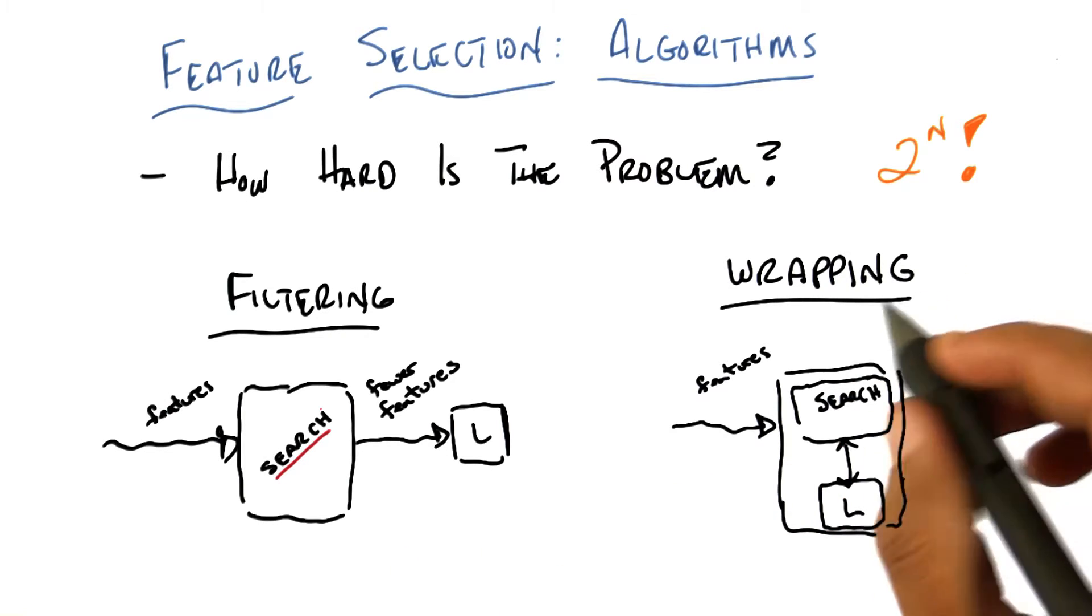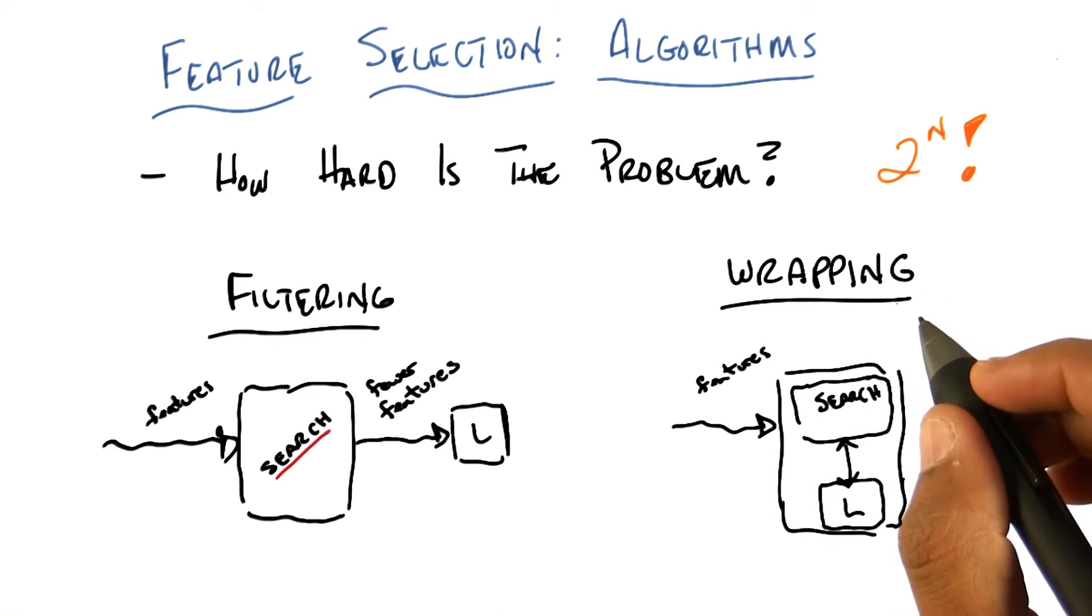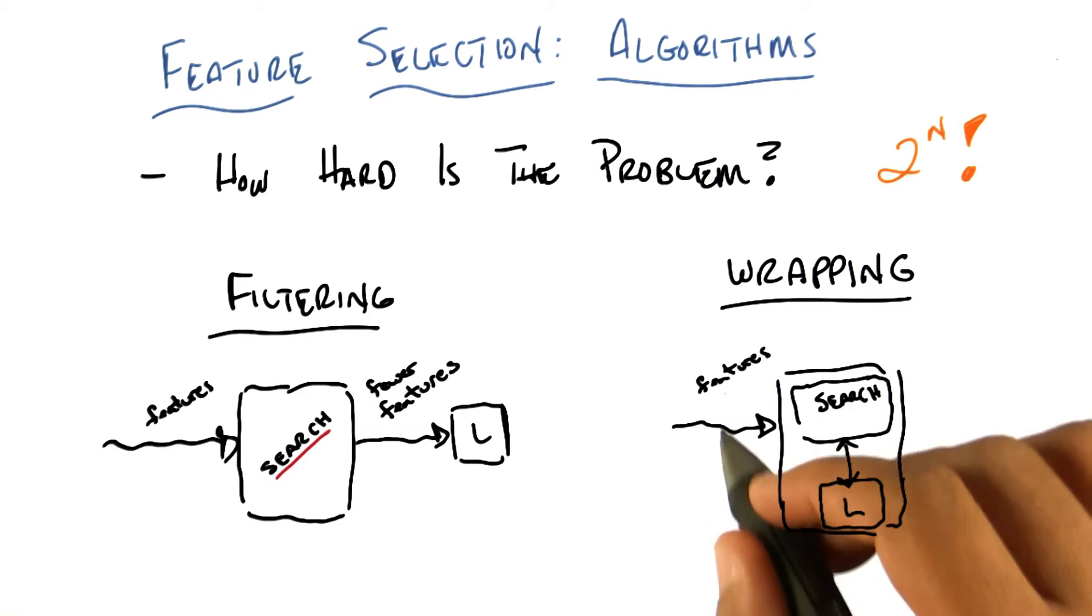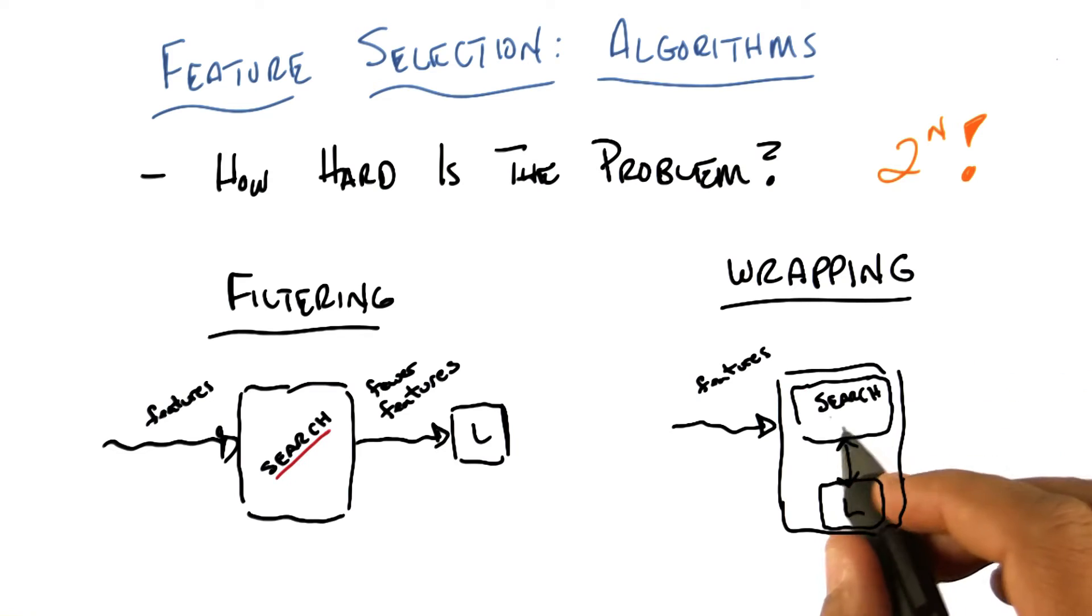By contrast, you could do what's called wrapping. And in the wrapping approach, you take in your set of features, and you run them into this little box that basically searches over a subset of features, ask the learning algorithm to do something with them. The learning algorithm basically reports how well it does, and it uses that to update this new subset of features that it might look for and passes to the algorithm.